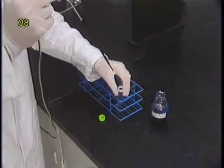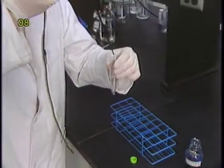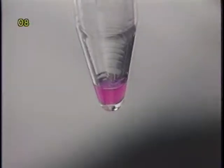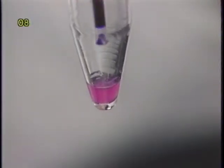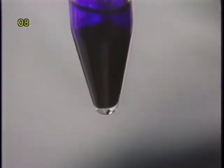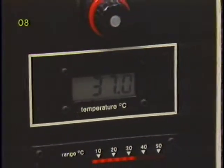Counting solution is then added to the beads to disperse them from the bottom of the tube. Be careful to avoid leaving beads on the wall of the test tube unsubmerged. The test tube is then screw capped and incubated at 37 degrees Celsius for approximately one hour.